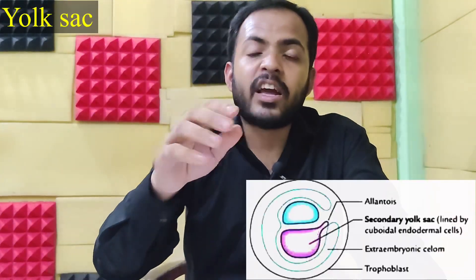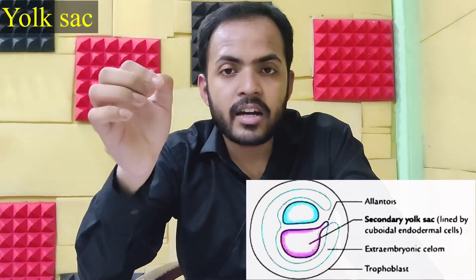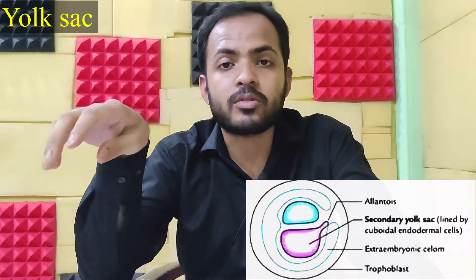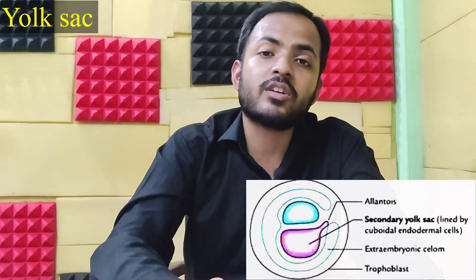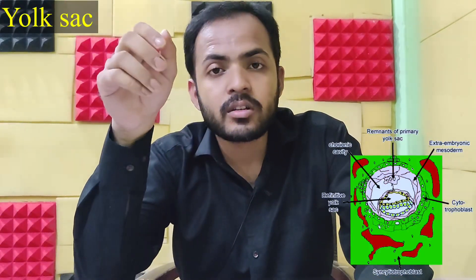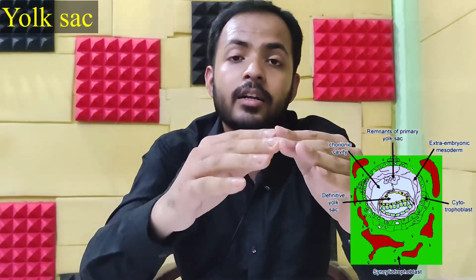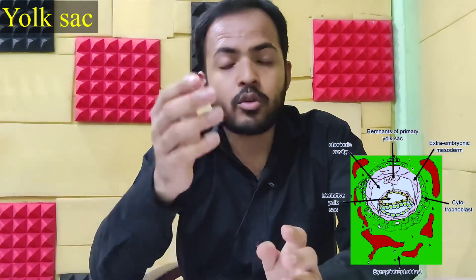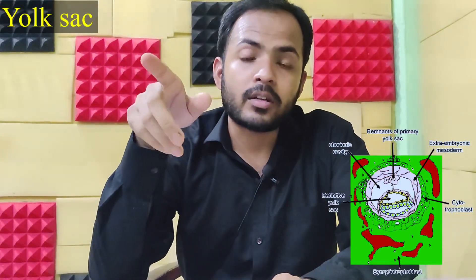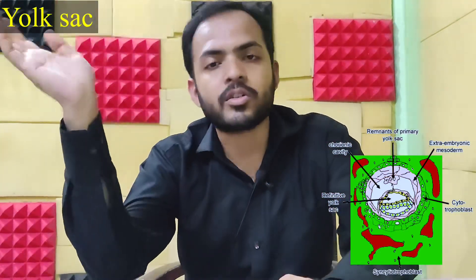For the secondary Exocoelom: after the formation of extra-embryonic coelom, it is pinched off and another small Exocoelom cavity forms — that is known as the secondary Exocoelom. For the definitive Exocoelom: during embryo folding, the intra-embryonic part of the Exocoelom forms the primitive gut, while the extra-embryonic part forms the definitive Exocoelom.